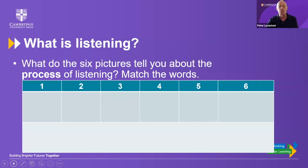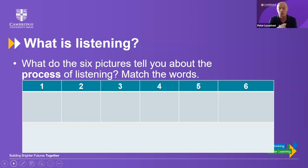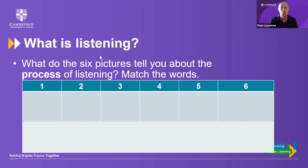Our first question is: what is listening? I'm going to show you six pictures and some words, and I'd like you to match the six pictures with the words you're going to see. To make this a little bit more difficult, I'm going to give you six pictures but eight words, so there are two words which are distractors — two words you don't need to use.